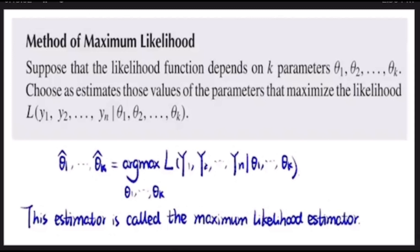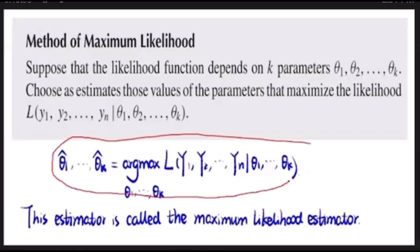You've got to make sure you are specifying the correct functional form before using the method of Maximum Likelihood. What we are seeking is the values of the parameter that will maximize the likelihood, and that estimator is going to be called a Maximum Likelihood Estimator.